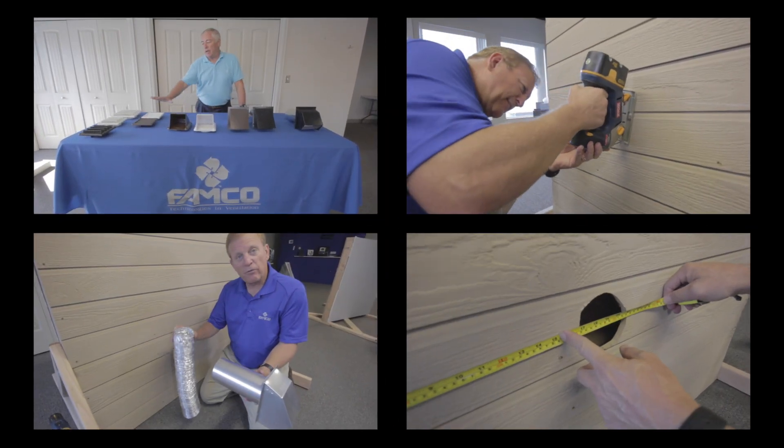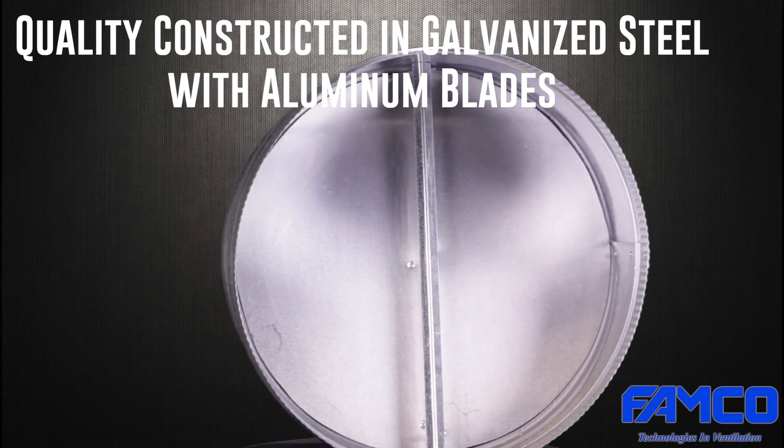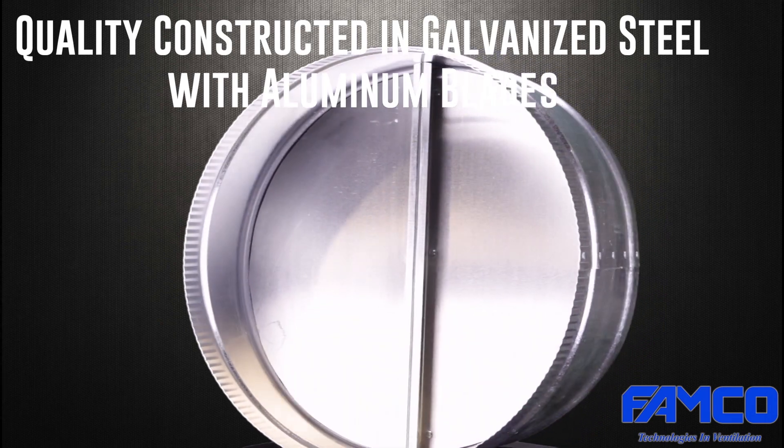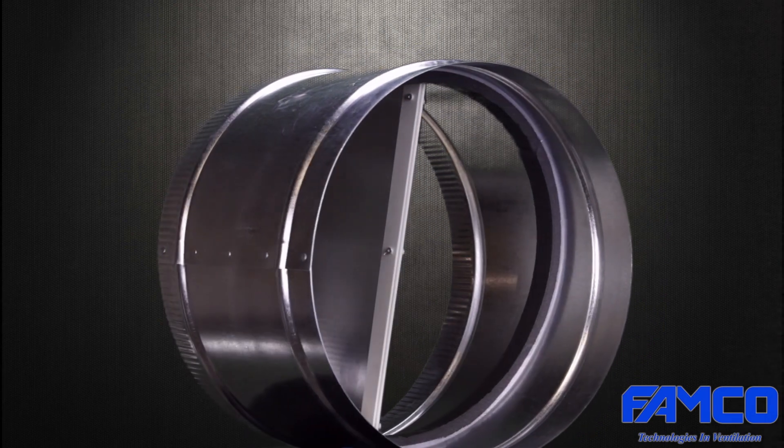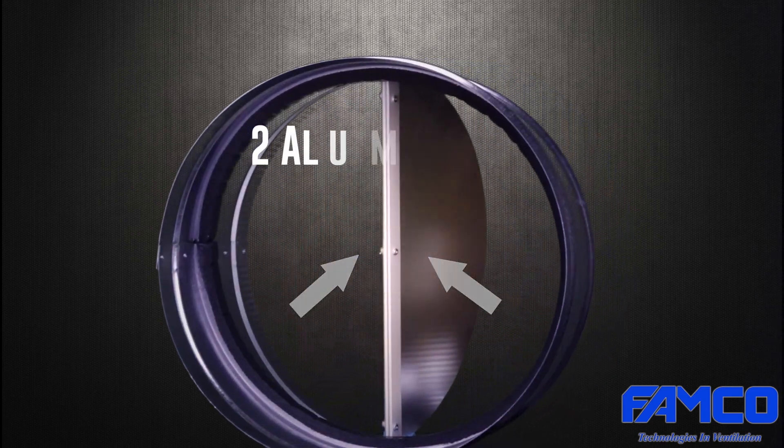Thank you for watching our video on how to install a backdraft damper. For this installation we'll be using our Famco butterfly damper, used as a backdraft damper for heat exchangers, exhaust systems, solar heating systems, and other intake or exhaust applications.